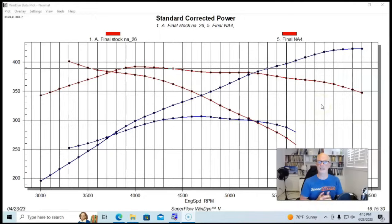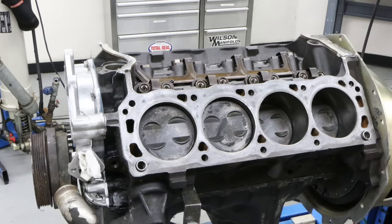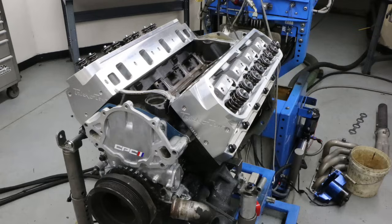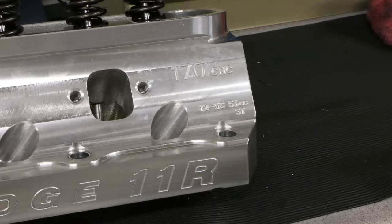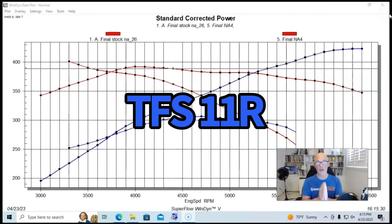What we have here is the 302 that I did for Car Craft. Again, this is a stock bottom end five liter that we started with, and then we added what are probably some of the best heads, cam, and intake manifold that we could on this thing. It was equipped with a set of Trick Flow TFS-R or TFS 11R heads—these were the 170cc small chambers.